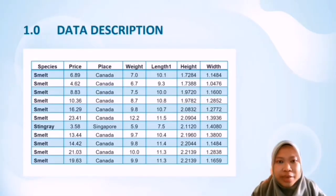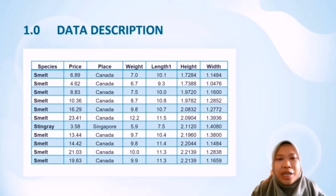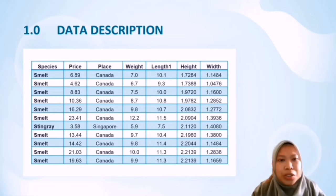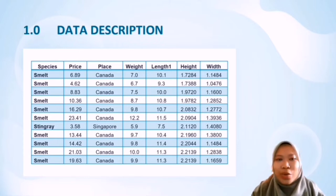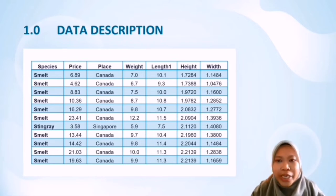Before we elaborate on the data further, descriptive statistics are used to describe the basic features of the data in a study. It provides simple summaries about the sample and the measures. We can also use descriptive statistics to rationally simplify huge amounts of data. For instance, based on the table shown, we can explain that 7 factors including species, price, place, weight, length, height and weight of a fish have been studied. Although only a part of it is shown in the table, the overall sample size is 60.